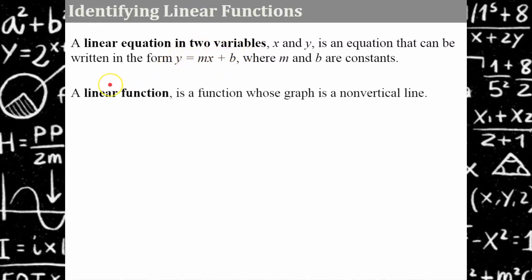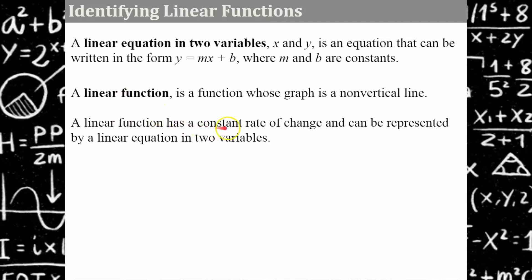A linear function is a function whose graph is a non-vertical line. One reason we say it's a linear function is it passes the vertical line test — a vertical line will fail the vertical line test. A linear function has a constant rate of change, and that's very important to remember. It can also be represented by a linear equation written in two variables. If you can rearrange the terms to be in slope-intercept form, then it is a linear function.